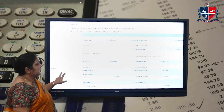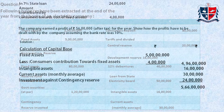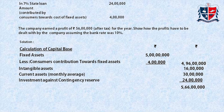Let us see the same thing through an illustration. Based on the question given, you have the share capital, fixed assets, depreciation reserve, contingency reserve, and other items needed to find out the capital base. The fixed assets are given, less contribution towards fixed assets, giving you a net amount. Adding intangible assets, current assets, and investment against contingency reserve, you arrive at a total of 566 lakhs.